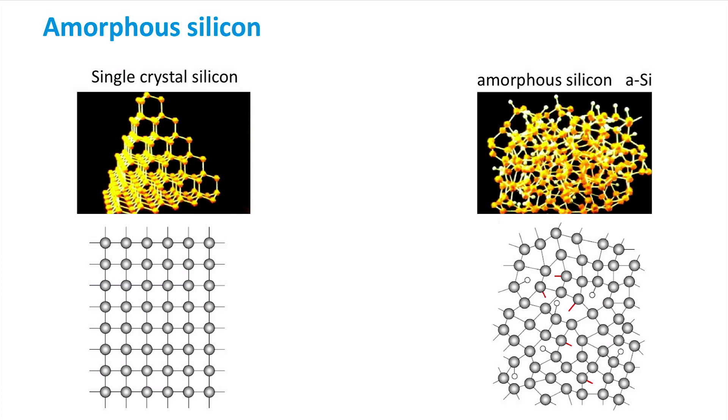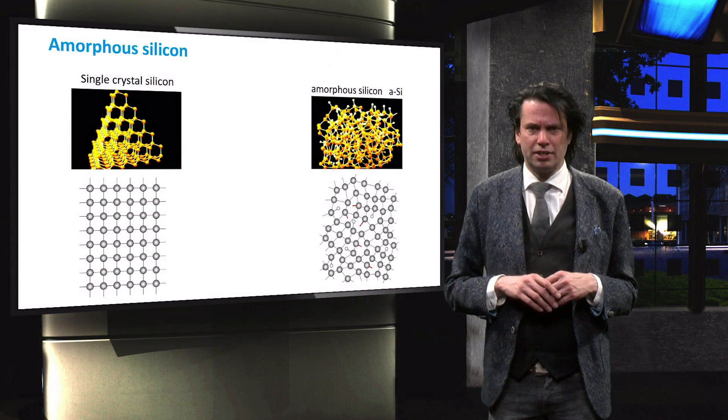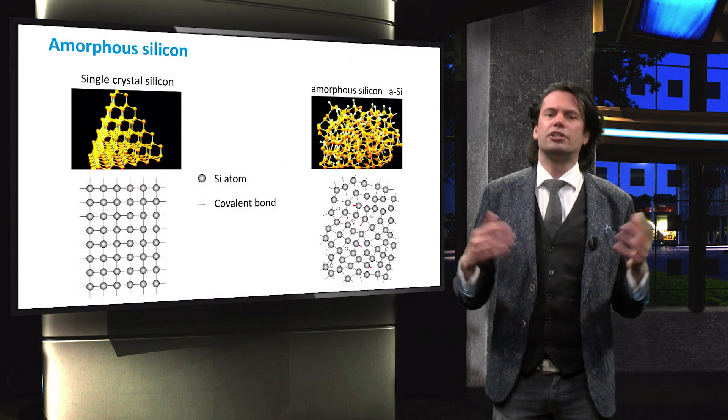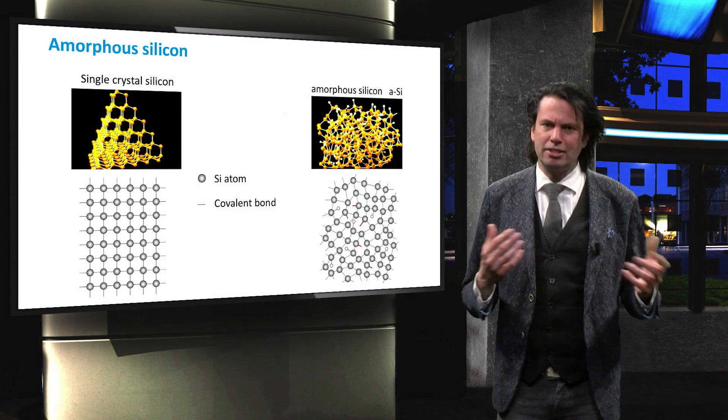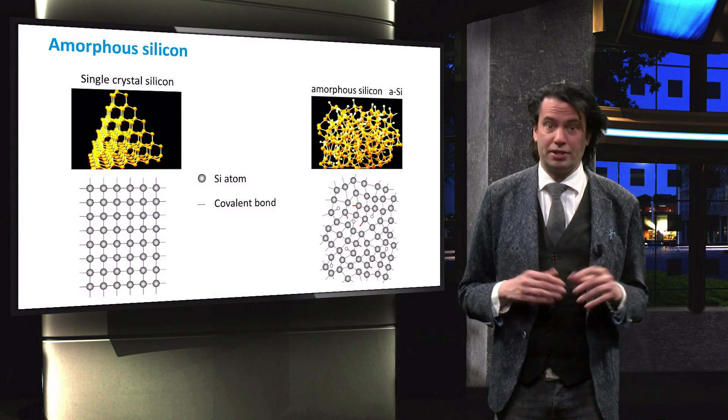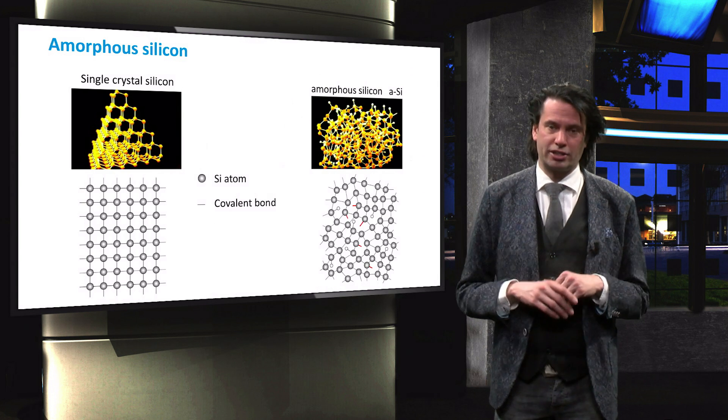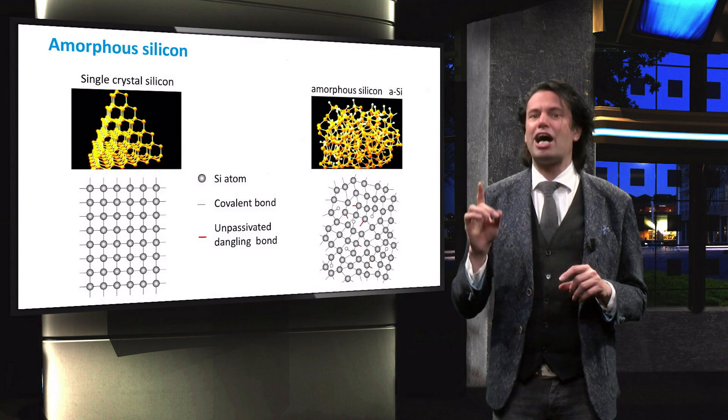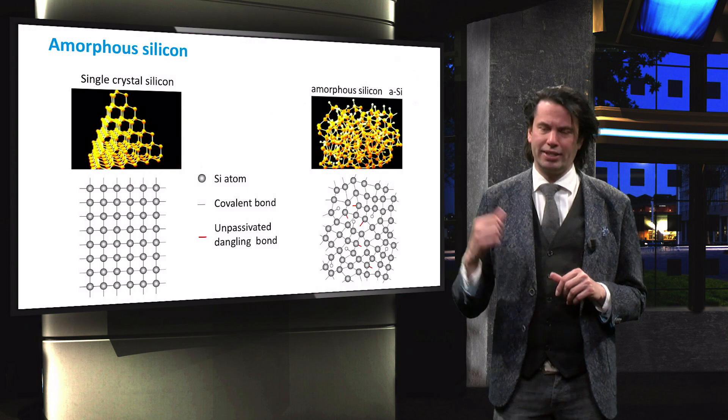If we look at these structures in two dimensions, we can discern the different types of imperfections that occur in the amorphous silicon lattice. The gray circles are the silicon atoms, and the lines connecting them are the covalent bonds. Since silicon has four valence electrons and the lattice is random, some valence bonds are not connected to other silicon atoms. These bonds are known as dangling bonds and are indicated by the red lines in the lattice.